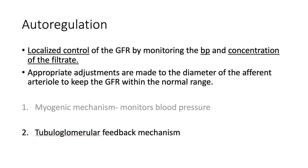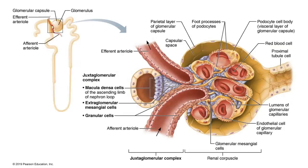The other mechanism is called tubuloglomerular feedback. This involves the macula densa sensing the salt concentration in the distal convoluted tubule. If there's a lot of salt in the filtrate, that means the filtration rate is high — it's moving through the nephron quickly and there's not enough time to reabsorb that salt. Conversely, if the salt concentration is low, the filtration rate is low because there's more time to reabsorb salt. So we monitor this too.